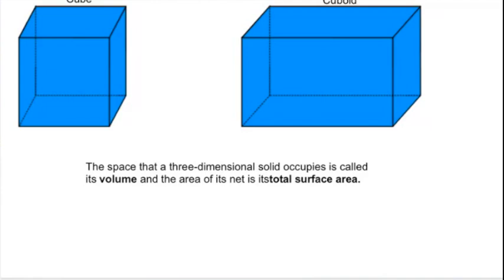The things we're going to be talking about today are volume and surface area. The space that a three-dimensional solid occupies is called its volume, and the area of its net is its total surface area.